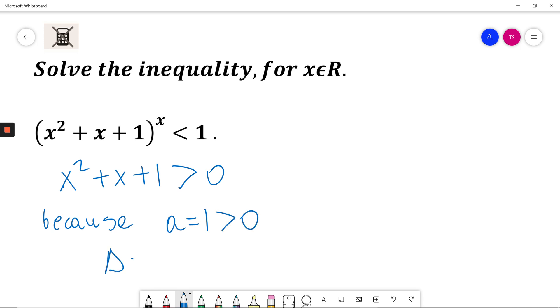And the discriminant, which we calculate: b² - 4ac, where coefficient b is 1, so it's 1² - 4 times 1 times 1, which equals 1 - 4, which equals